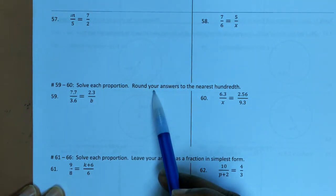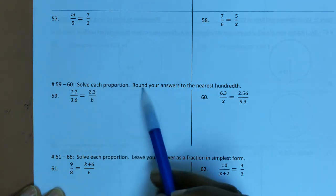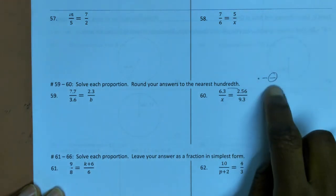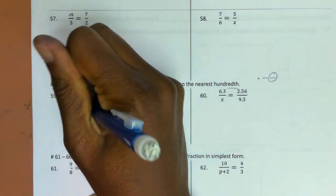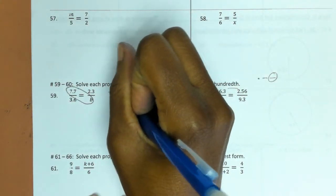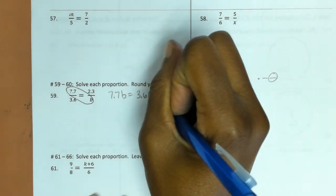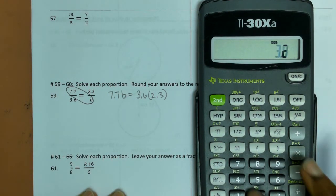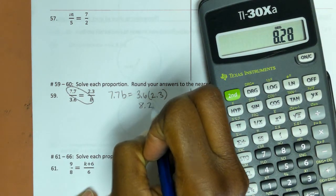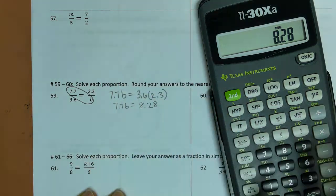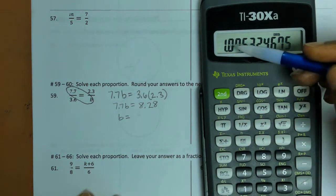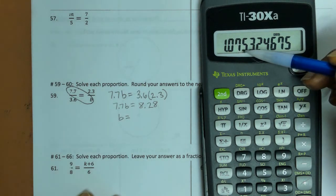For problems 59 and 60, we solve each proportion and round to the nearest hundredth — the hundredth place is two decimal places. Cross multiplying: 7.7B = 3.6 × 2.3. Computing 3.6 × 2.3 gives 8.28. Dividing 8.28 by 7.7: looking at the decimal, tenths is 0 and hundredths is 7. The thousandths place is 5 or higher, so we round up. The answer is approximately 1.08.